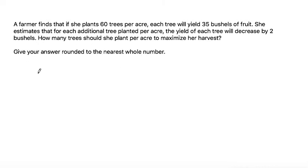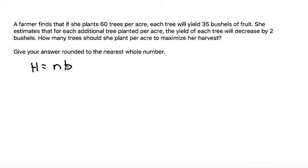We need to start by finding some kind of a formula between harvest and number of trees. So let's say that the harvest is equal to the number of trees times the bushels per tree. That general idea gives us the number of trees times the bushels per tree equals the number of bushels for the harvest. We know that planting 60 trees per acre yields 35 bushels of fruit.